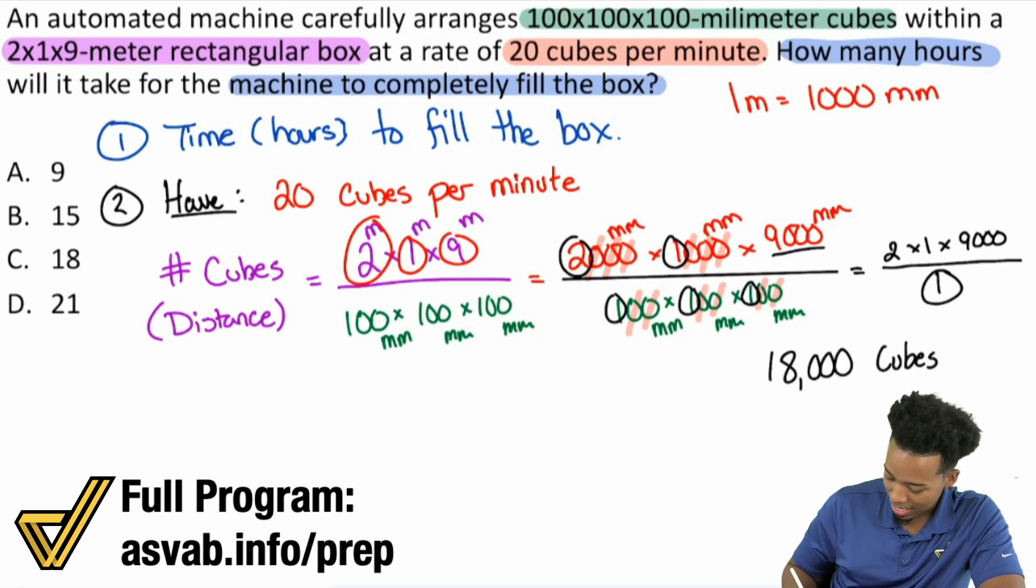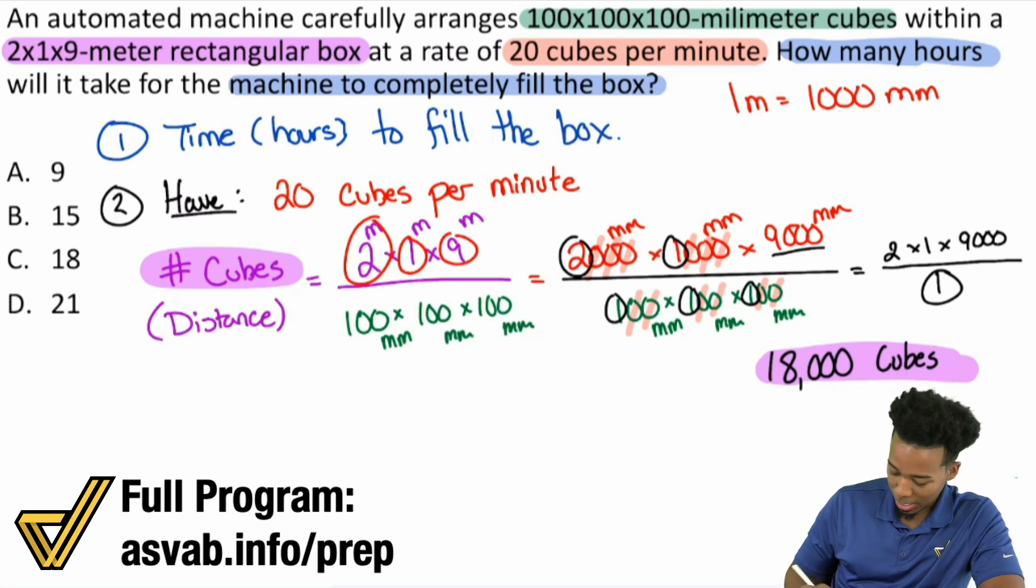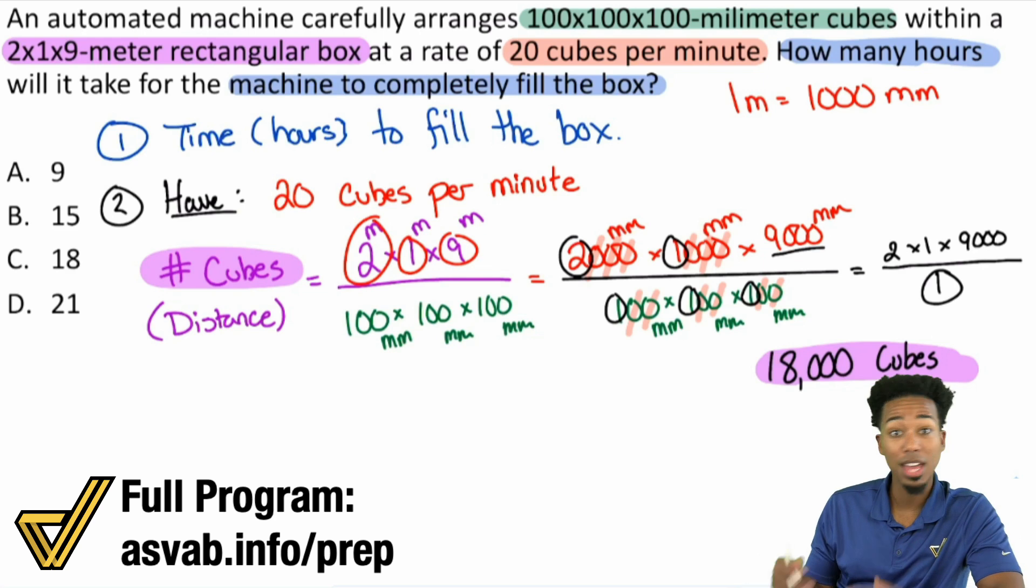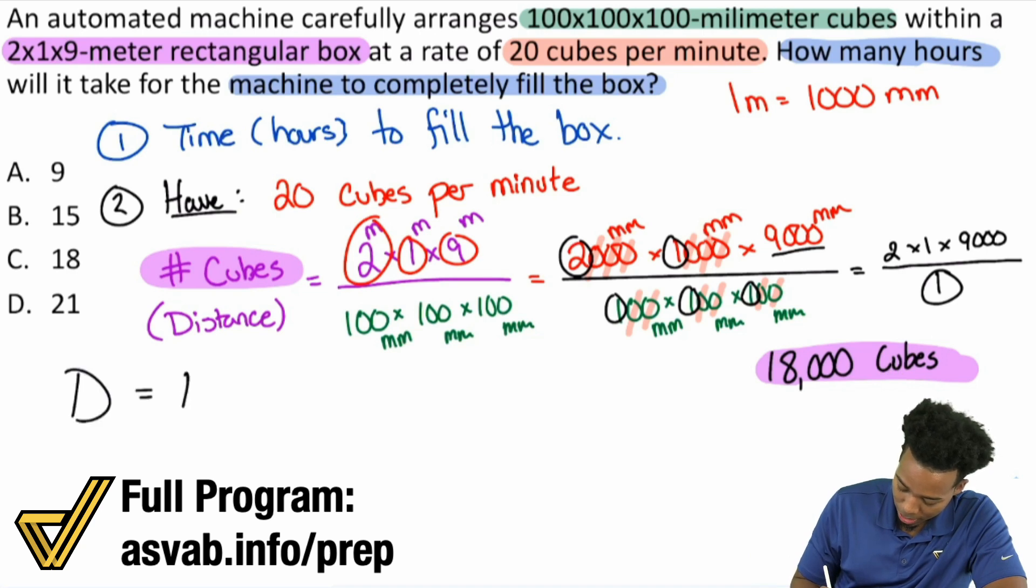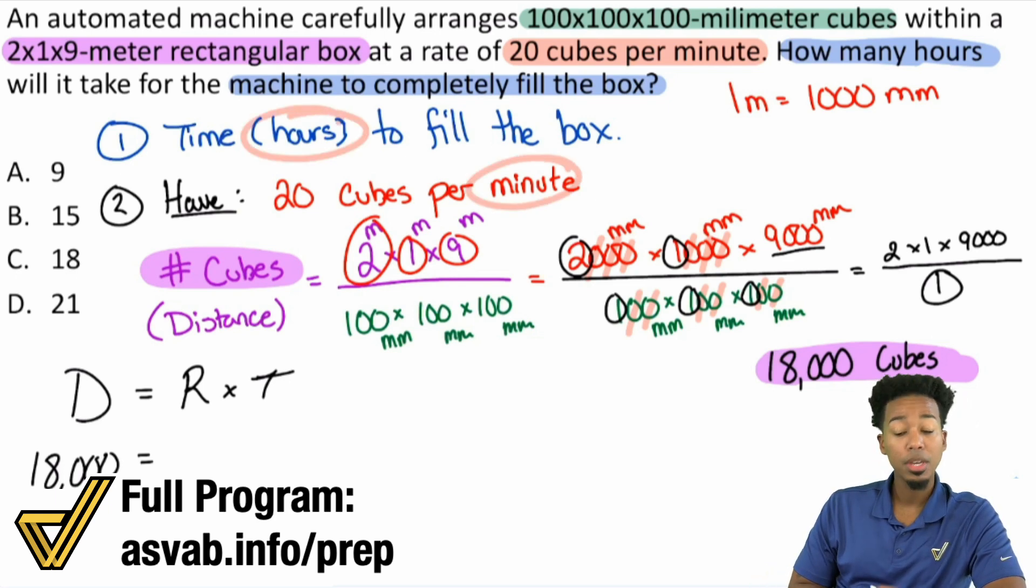Great. Let's apply our distance rate time formula. We have a time we're looking for, we have a rate, we have a distance. Our distance equals rate times time. The distance is 18,000 cubes. Our rate, be careful, because the answer we're looking for is in hours, but the rate we're given is per minute. Let's take a moment to turn the 20 cubes per minute into how many cubes per hour.